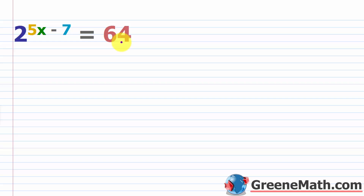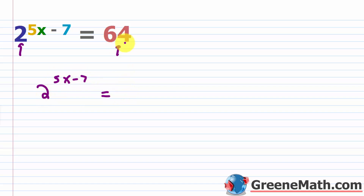If you didn't know that, always look at the simpler number. If you have a prime number like two, five, or seven, check to see if the number on the other side is divisible by it. I know 64 is divisible by two. If you set up a factor tree, you'll find it's two to the sixth power. So I can rewrite the problem: two to the power of five x minus seven equals two to the sixth power.